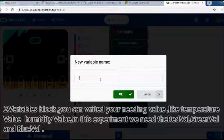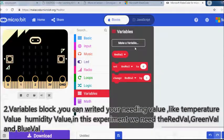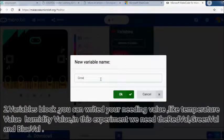Second, variables block. You can write your needed values, like temperature value or humidity value. In this experiment we need the red val, green val, and blue val.